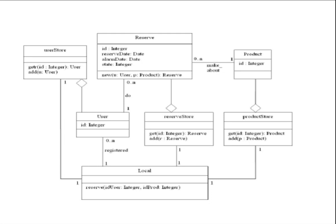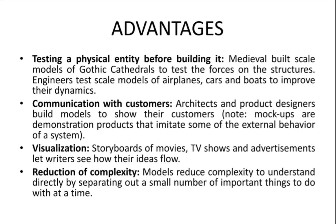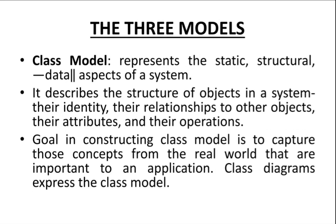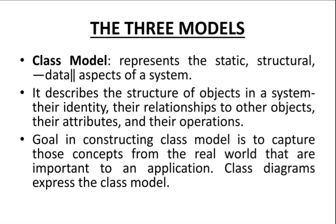A model is the abstraction of something for the purpose of understanding it before building it. This class model represents the static and structural aspects of the system. In simple words, your software will be represented in the form of classes. Classes are nothing but a set of objects, and the class model explains the objects in a system, the relationships between the objects, their attributes, and their operations.